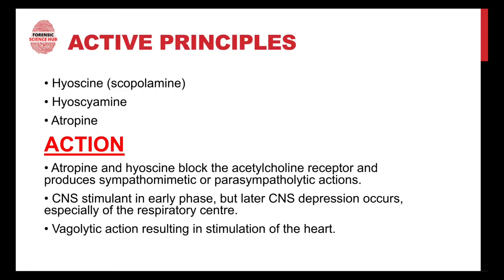Moving on to the active principles of dhatura: dhatura contains a number of alkaloids. The three most important alkaloids present in the highest amounts are hyoscine (also known as scopolamine), hyoscyamine, and atropine.